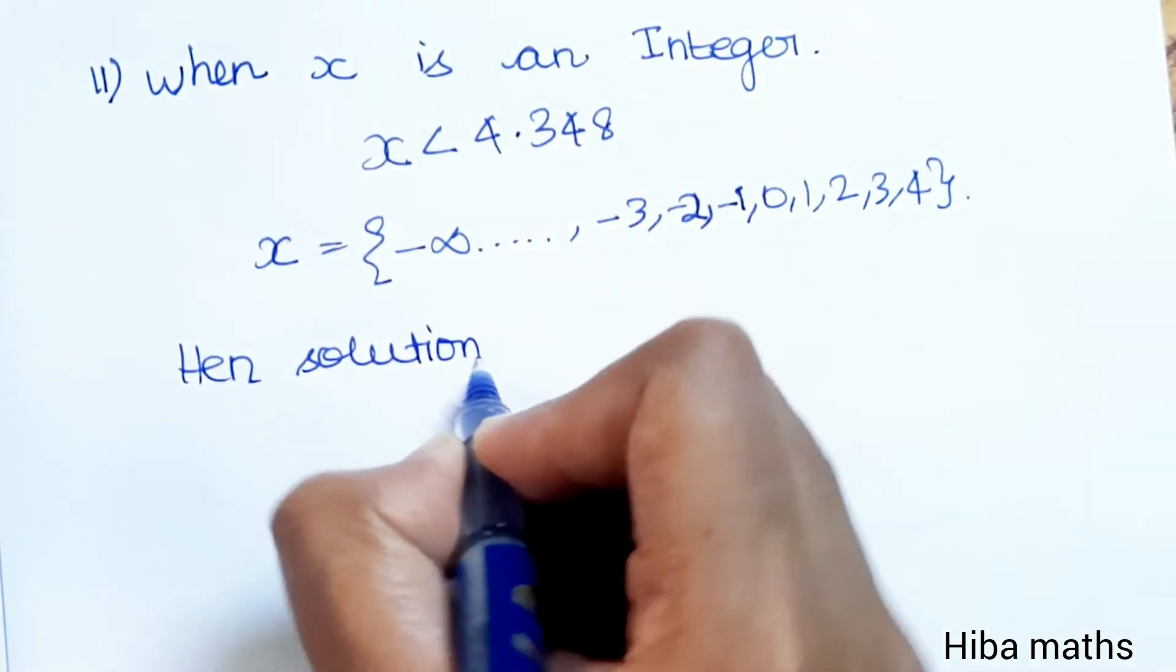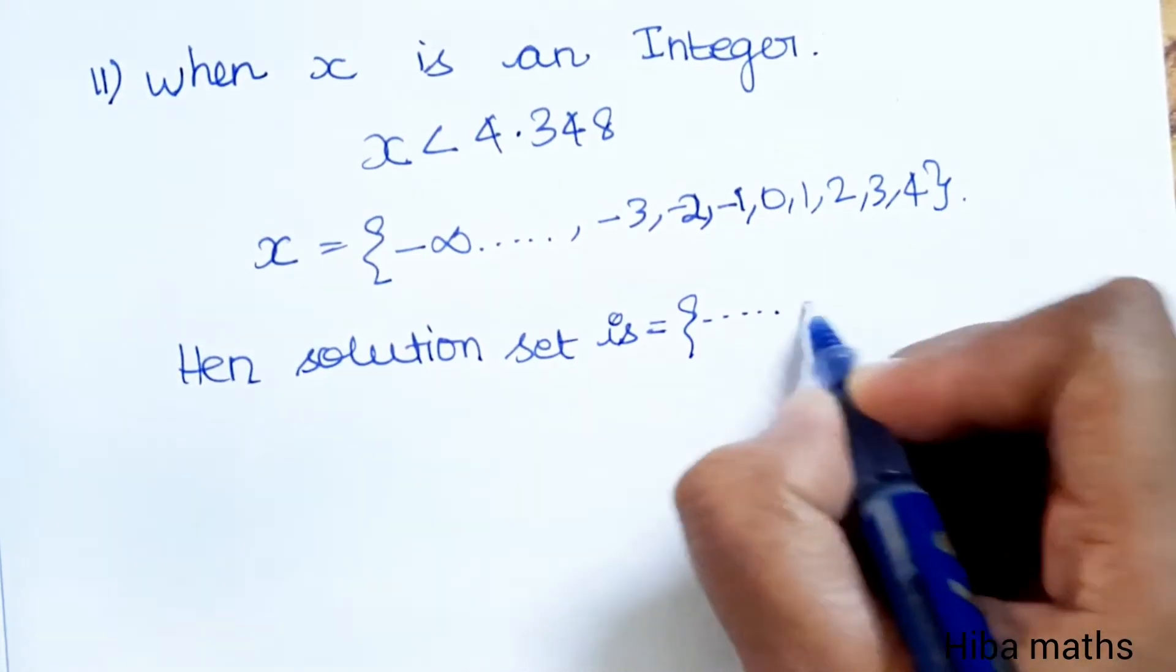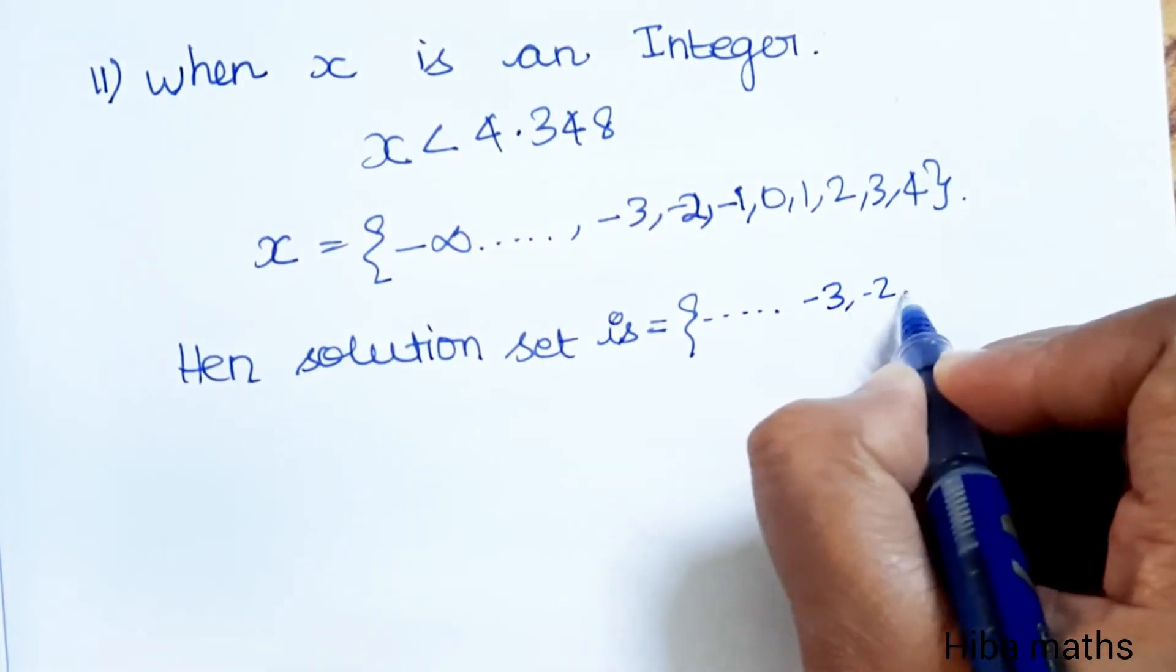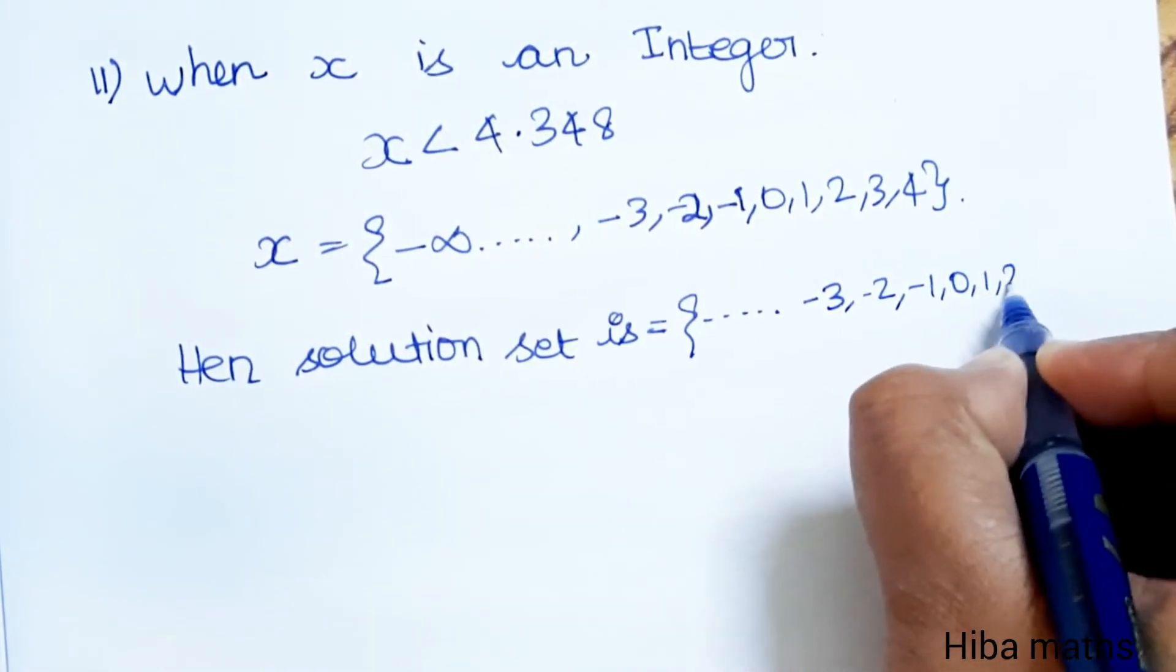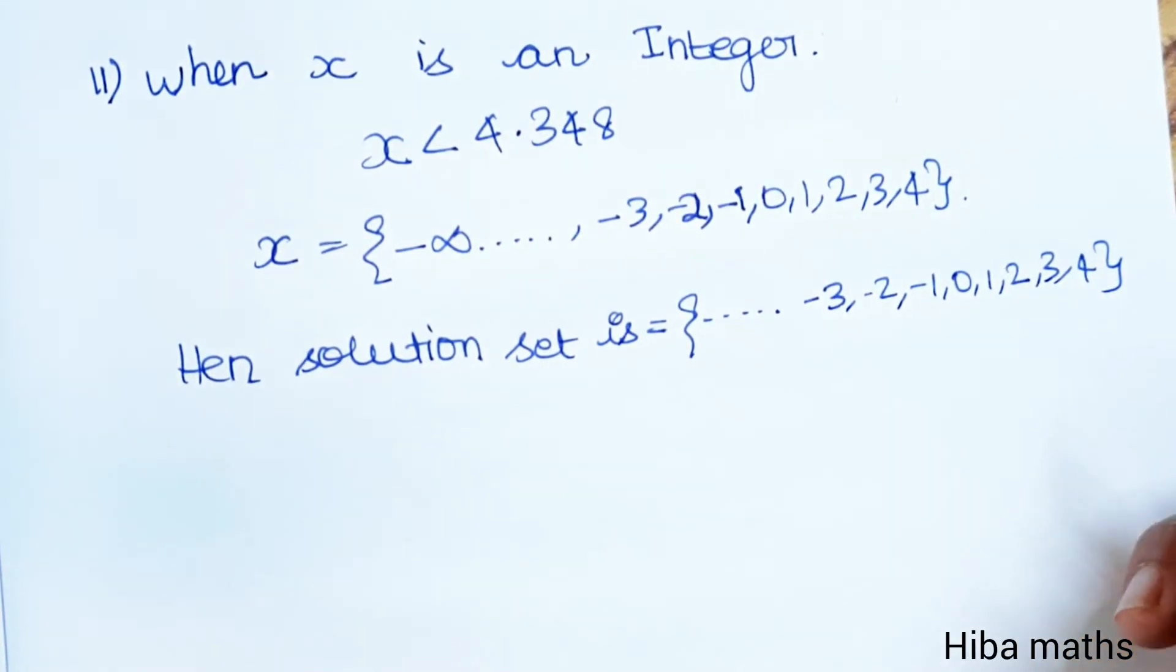Solution set is dot dot dot minus 3, minus 2, minus 1, 0, 1, 2, 3, 4. Thank you so much for watching.